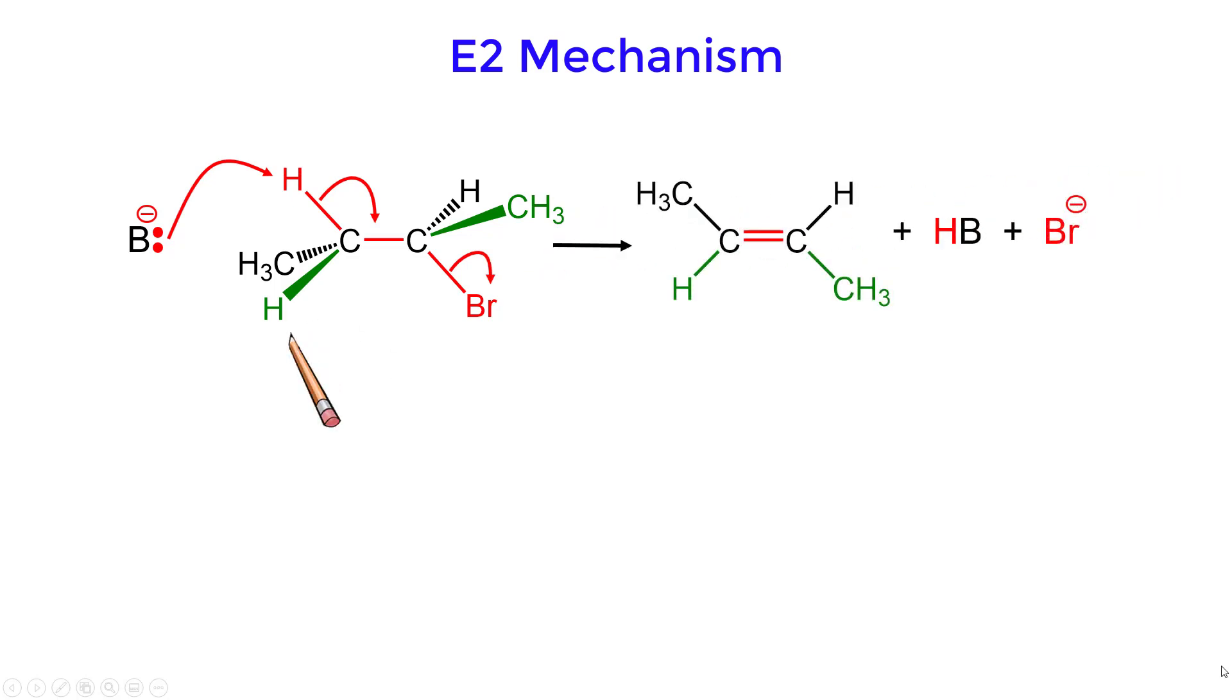Notice that the green hydrogen and the green methyl group are on the same side in the dashed and wedged diagram, are also on the same side in the alkene.